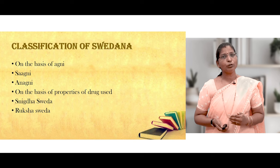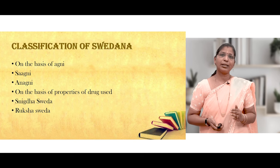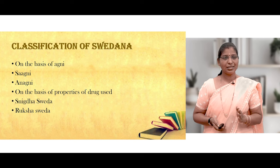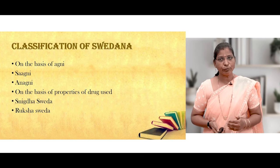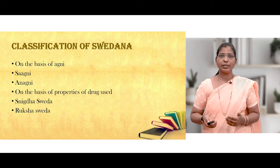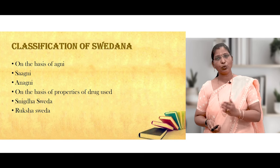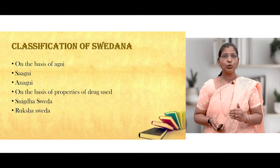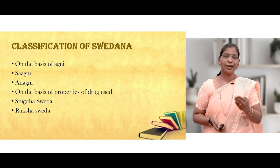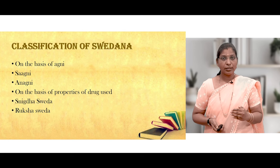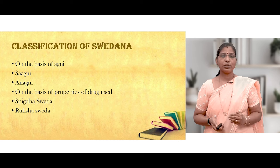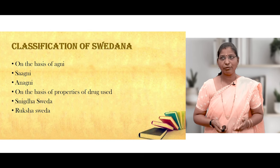Classification of Swedana on the basis of Agni: Sagni and Niragni are two major types. On the basis of properties of drug used, Snigdha Sweda and Ruksha Sweda are two classical types — where Snigdha Dravyas or Sneha is used it is called Snigdha Swedana, and without oil it is called Ruksha Sweda, like Lavan Pinda Sweda or Valuka Sweda.